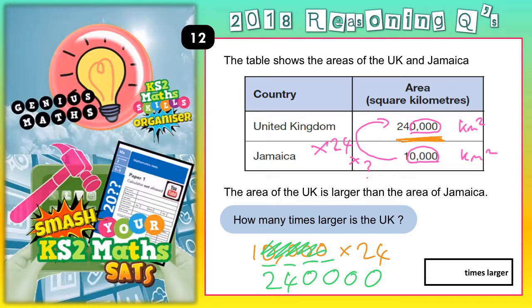And then we'd put our comma in. Remember, your comma goes three digits in from the end: 1, 2, 3 — comma. And indeed, if you times 10,000 by 24 and make it 24 times bigger, you do get 240,000.